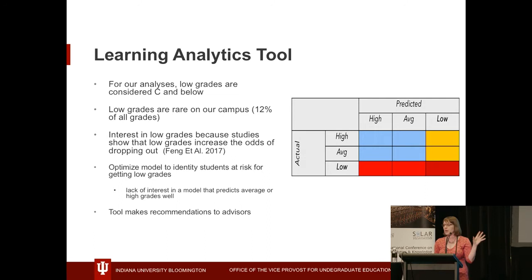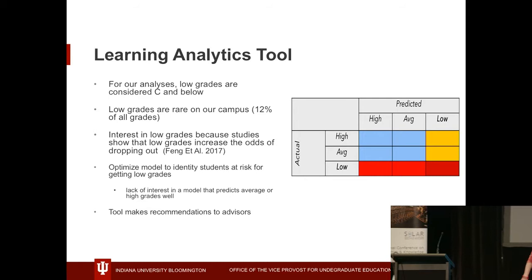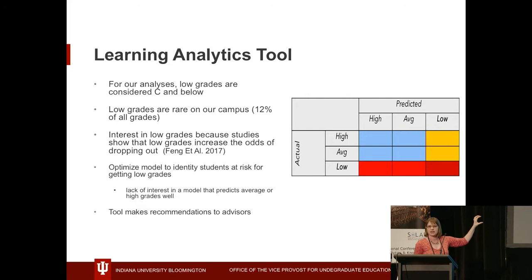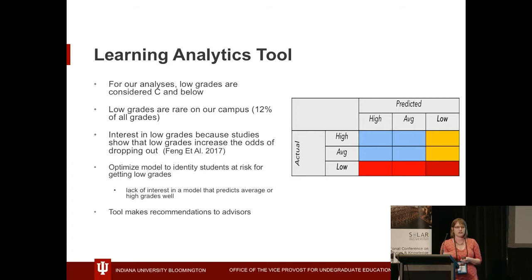Looking at the confusion matrix, we're concentrating on the area in red at the bottom — where both the predicted and actual grades end up being low. That's what we really wanted to focus on. The tool makes those recommendations to the advisor, but we're only showing results that are above random, so we know there is some conviction behind what we're showing.